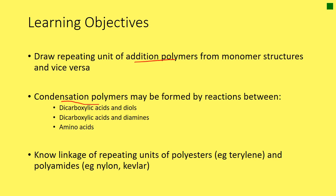Then we're going to look at condensation polymerization, which may be new for you apart from what we saw with amino acids. And specifically we're going to look at three different types of reactions to produce three different condensation polymers. Lastly we're going to know specific linkages — the repeating units of polyesters, an example of terylene, and the linkages between polyamides, for example nylon and Kevlar.